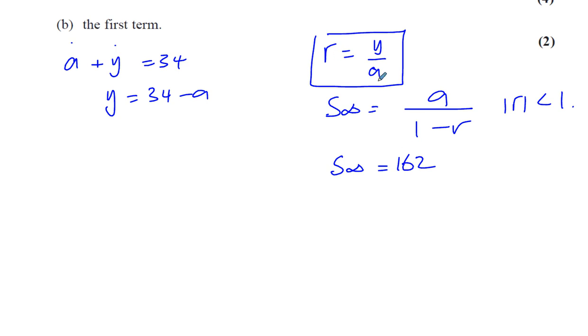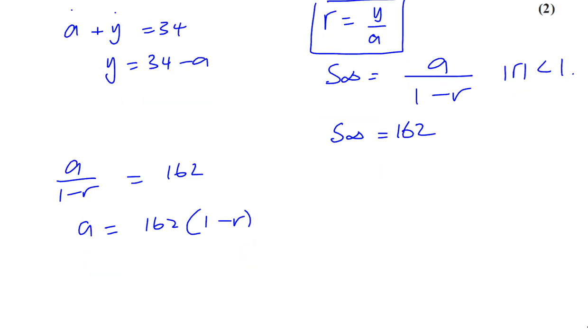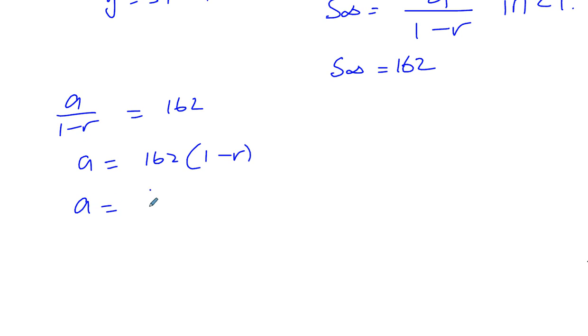I know the common ratio is Y over A. So I can express this common ratio as Y over A. We know that A over 1 minus R is equal to 162. So A is equal to 162 times 1 minus R. R is the same as Y over A. So let me make that Y over A.